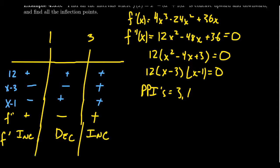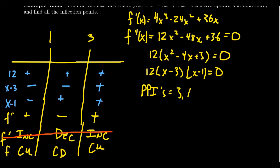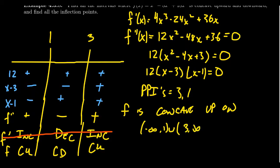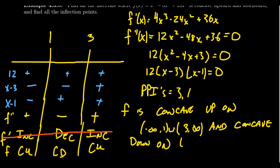What this tells us about the function f itself: if the second derivative is positive, the function is concave upward; if negative, concave downward. So f is concave upward on the interval negative infinity to 1, union 3 to infinity. It is concave downward on the interval 1 to 3.